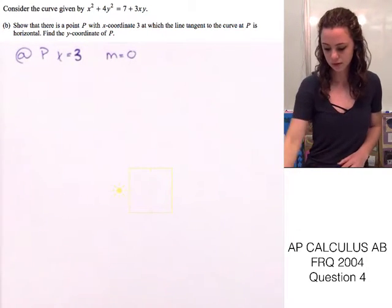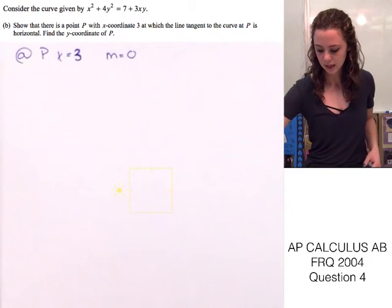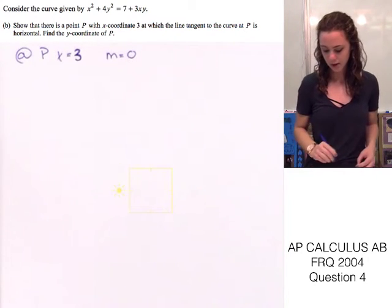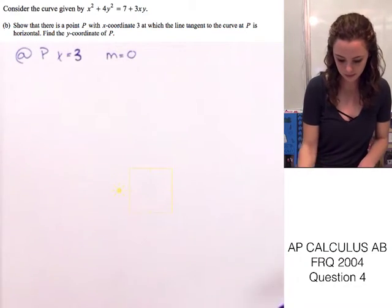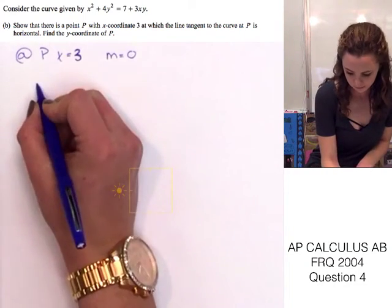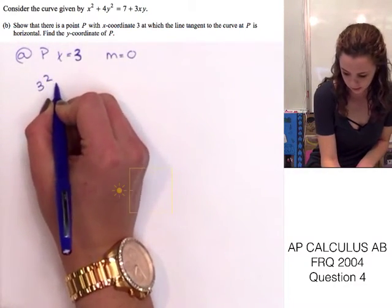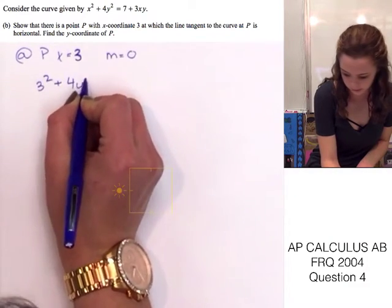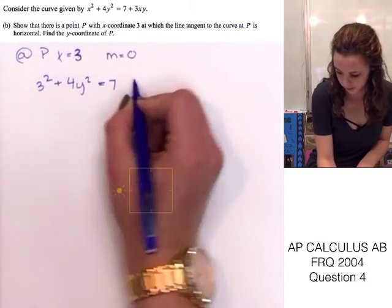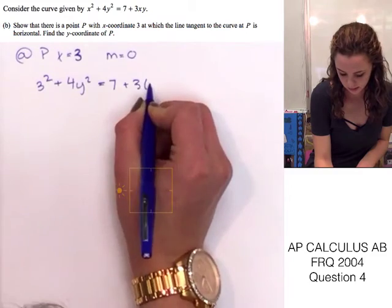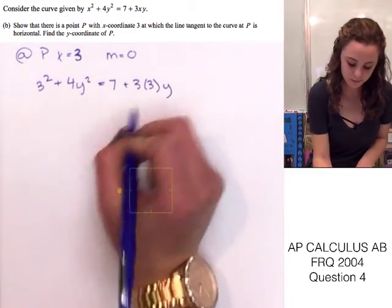To do so, we're going to take the original function and plug 3 in for x and then solve for y. So, let's take 3 squared plus 4y squared equals 7 plus 3 times 3 times y.